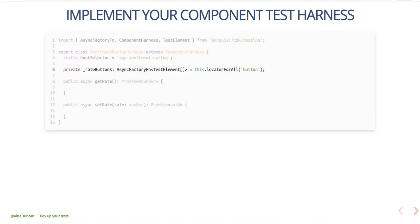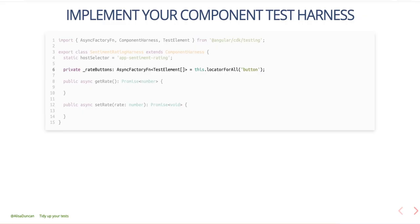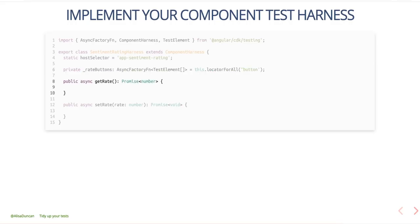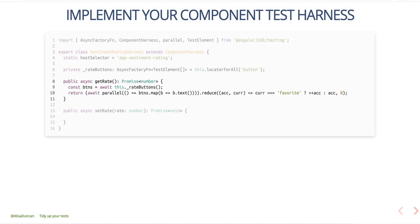Next, we want to return all the UI elements on this component. Because we have a fairly simple component that's just a bunch of buttons, we can use the base class's locatorForAll method with the selector 'button'. If you have multiple different types of UI elements, there are other methods in the base class you could use instead. Note that we're not returning the buttons themselves — we're returning a function that returns the buttons. This is done so that it optimizes for the current state of the buttons and for change detection. Now let's think about the public API — since this is a rating component, I expect most people will want getRate and setRate. To implement getRate, we first get all the rate buttons, then return the number of filled hearts, which corresponds to the current rate. Because we're making a couple of asynchronous calls, we can use the helper method parallel.